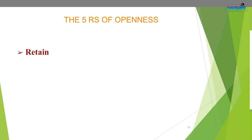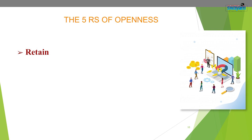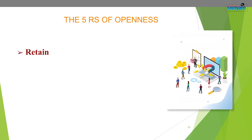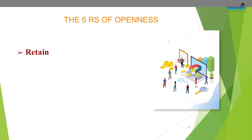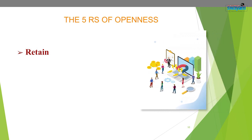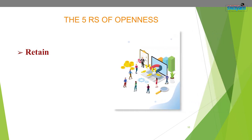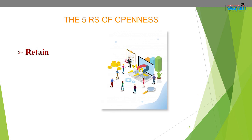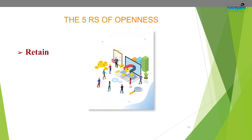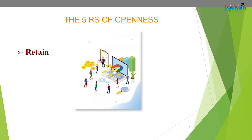The first R is retain — that is, you have the right to make, own and control copies of the content. That means you can download, duplicate, store or manage the content.